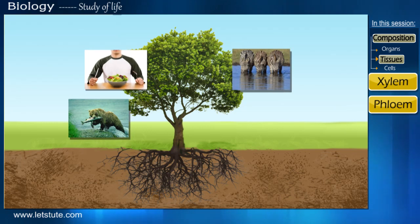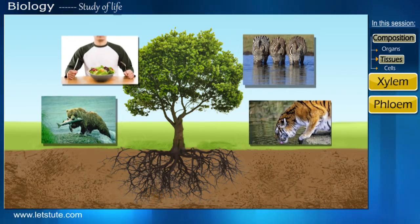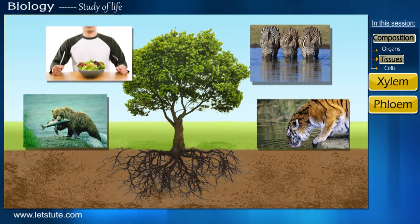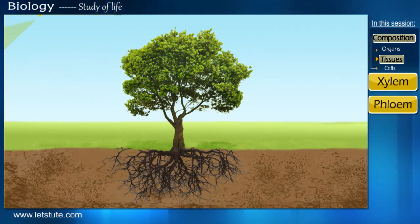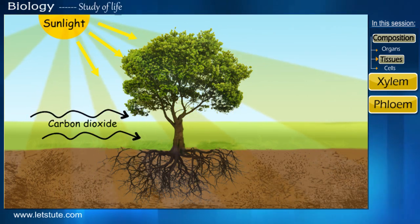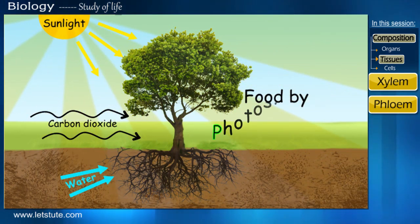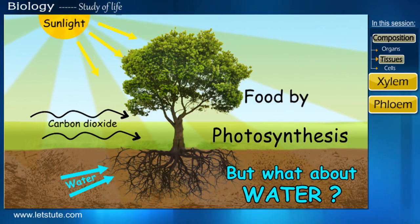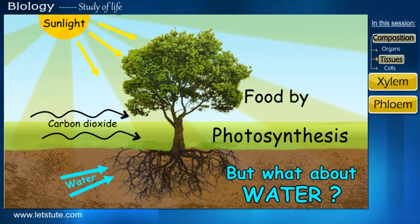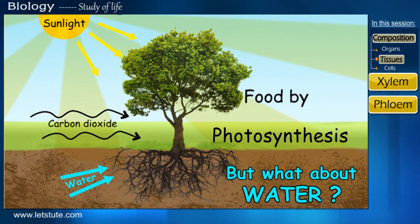Like any other living organism, plants also have the same requirements of food and water to live. Talking about food, by now we know that plants prepare their own food through a process called photosynthesis. But what about water? From where do they get their required water? For that, we need to look at the water transport system in a plant.